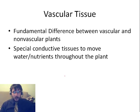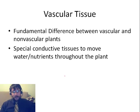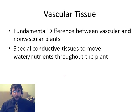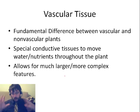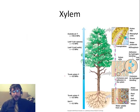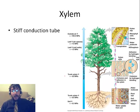The main difference is what we're going to start with: vascular tissue. Vascular plants are called vascular plants because they have special conductive tissue to move water and nutrients throughout the plant. Therefore, they can grow way, way larger and more complex. There are two main types of vascular tissue that you need to know about.